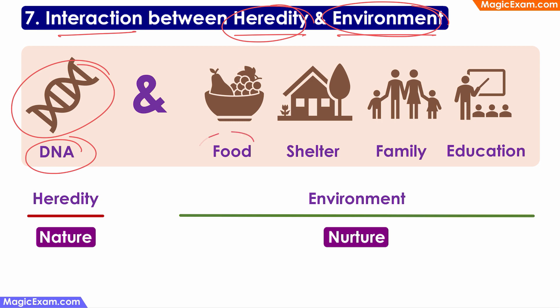The child has to get good food, good shelter, and good physical activity. Only then can the child grow into the tall and strong person that is possible because of his or her genes.